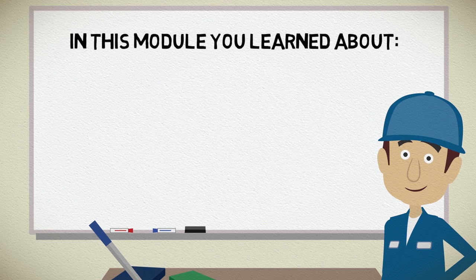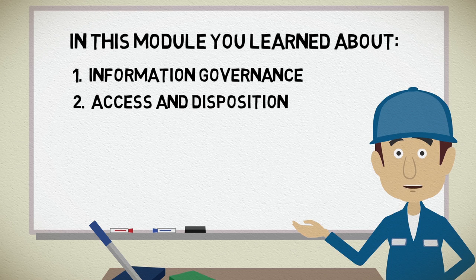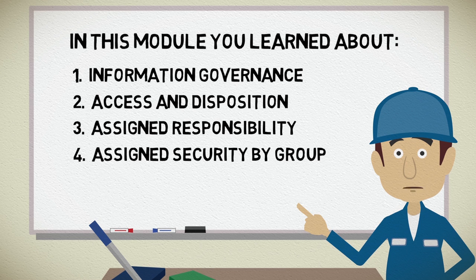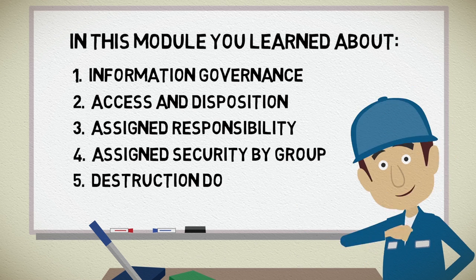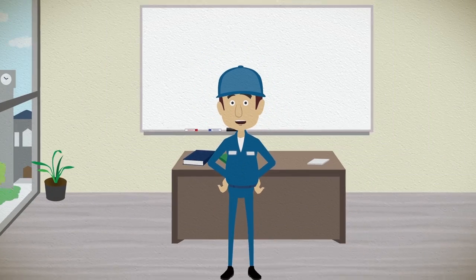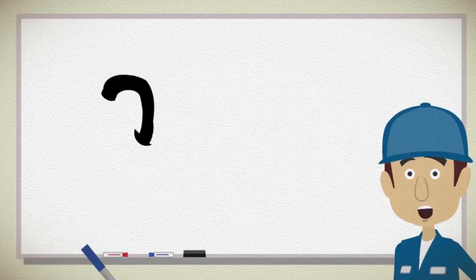Okay, what did we learn? The concept of information governance. Shared drives and all content systems including SharePoint and Workspace should be organized by function and activity with access and disposition in mind. Assign responsibility for managing the drive. Access to shared drives should be controlled via security group. Follow the approved retention schedules and document what is being destroyed. Got an information governance problem but don't know where to start? Contact the records management office. It's quiz time!